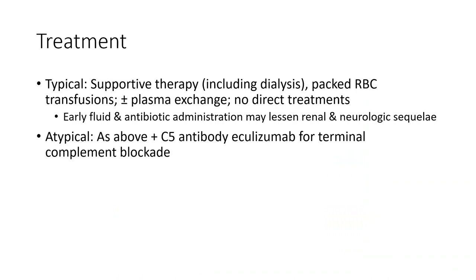Treatment for typical HUS is supportive therapy, including dialysis and transfusions, with plasma exchange plus or minus plasma chain. There is no direct treatment; however, early fluid and antibiotic administration may lessen renal and neurological injury. For atypical HUS, treatment includes eculizumab, a C5 antibody providing terminal complement blockade. Thank you.